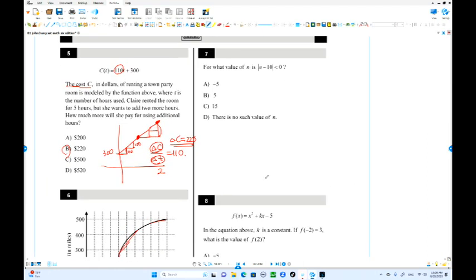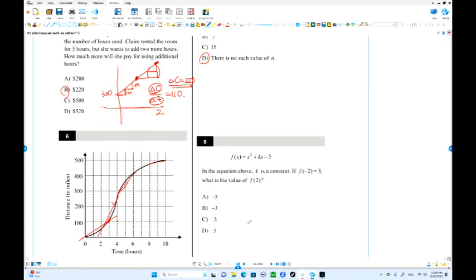Number 10. For what value of n, absolute value of n minus 10 is less than 0. Absolute value cannot be negative number, so there is no such number n. No solution there.